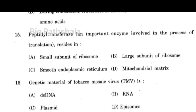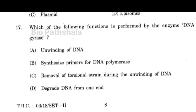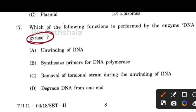Next question: the genetic material of tobacco mosaic virus is RNA. Generally, plant viruses and bacteriophages are RNA-based. Next question: which of the following function is performed by the enzyme DNA gyrase? In prokaryotes this enzyme is called DNA gyrase; in eukaryotes they are known as topoisomerases.